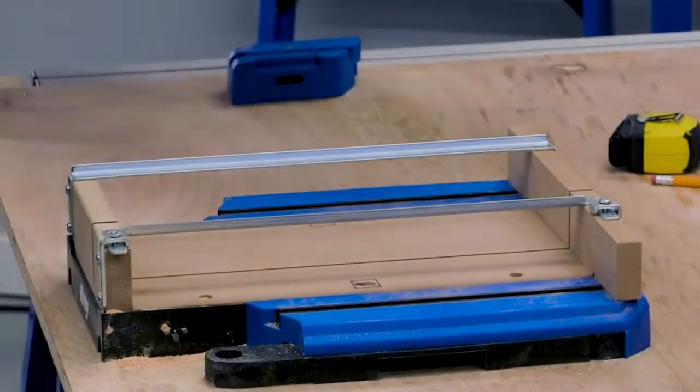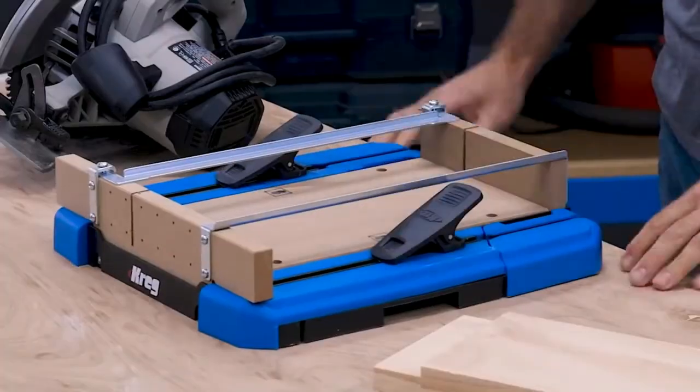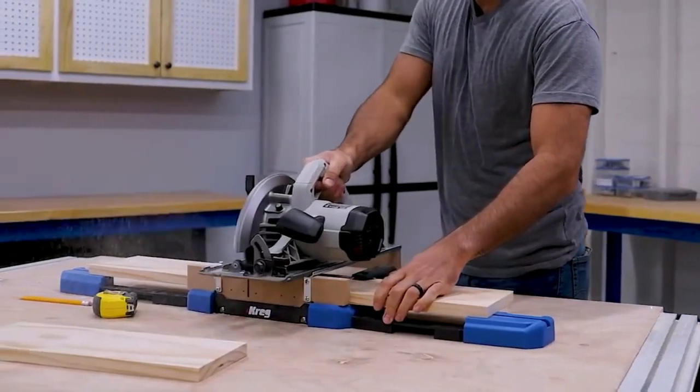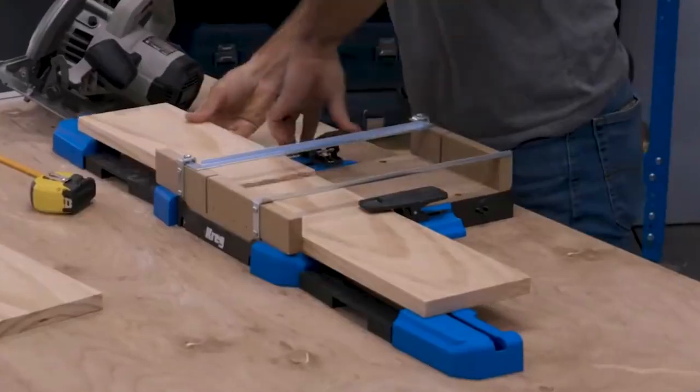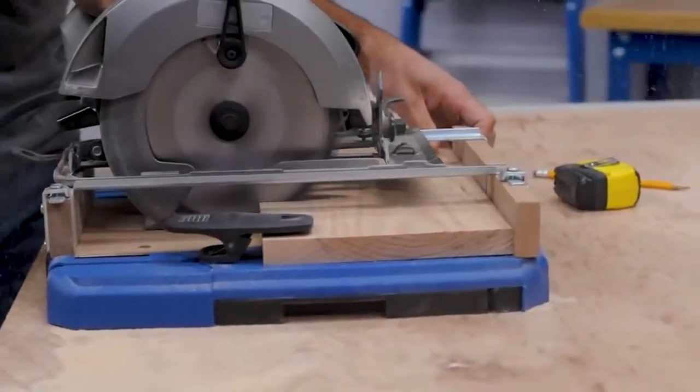Plus, the backboard makes it easy to align your material for perfectly positioned cuts because the kerf shows exactly where your blade cuts. All you have to do is align your cut line with the edge of the kerf on the Sure Cut backboard and you know your material will be positioned exactly where you need it.